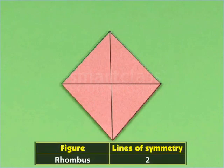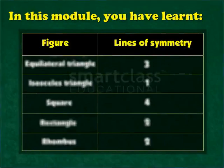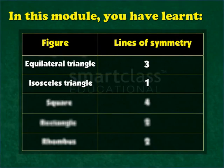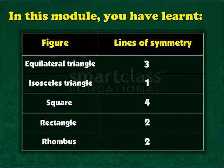So, this way we can find the lines of symmetry of various shapes by paper folding. In this module, you have learned: an equilateral triangle has three lines of symmetry, an isosceles triangle has only one line of symmetry, a square has four lines of symmetry, a rectangle has two lines of symmetry, and a rhombus has two lines of symmetry.